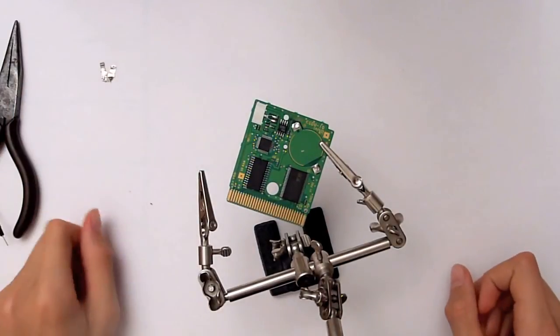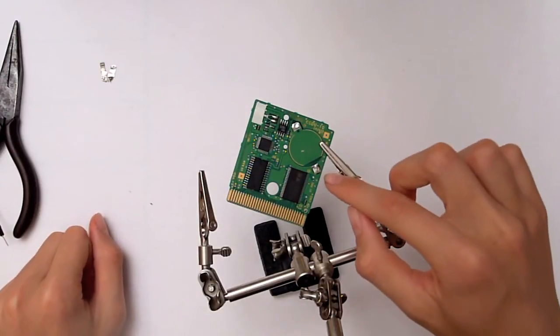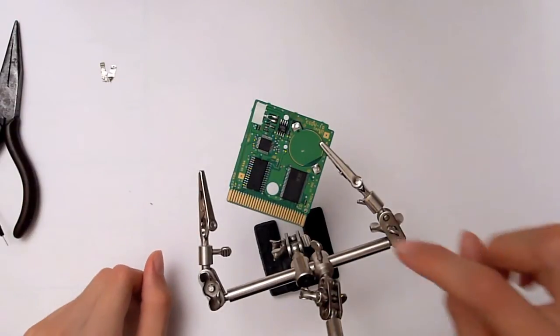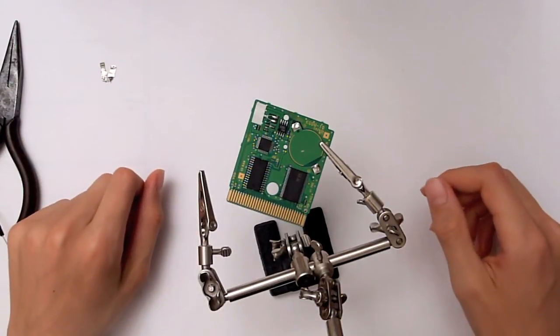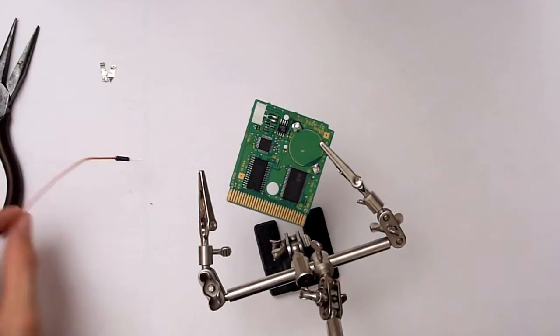That was a lot easier than I thought. I just had to rub the soldering iron for a couple of seconds on these terminals and they came right off. As you noticed, I didn't use a solder pump. You don't need one for this. That's optional.